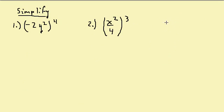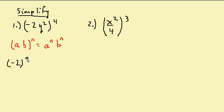Let's look at some more examples. I'm going to use the property: (ab) raised to the n equals a to the n times b to the n. I raise each term inside the parenthesis to the exponent outside. So I'm going to raise each one to this fourth power. I get negative 2 raised to the fourth times y squared raised to the fourth. So I have negative 2 to the fourth, which is 16, and then 2 times 4 gives y to the 8th — there's my answer.